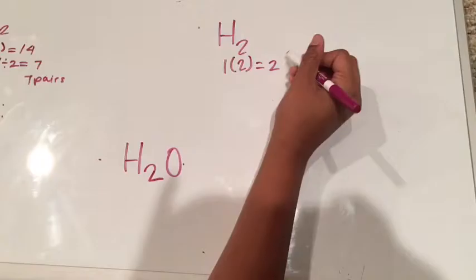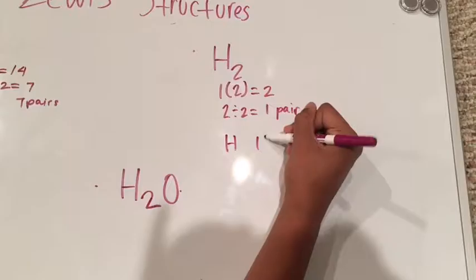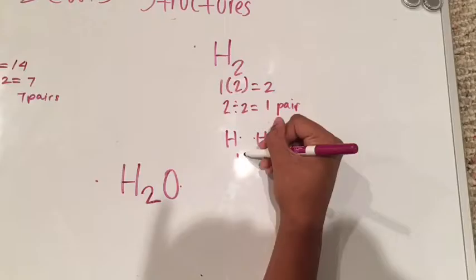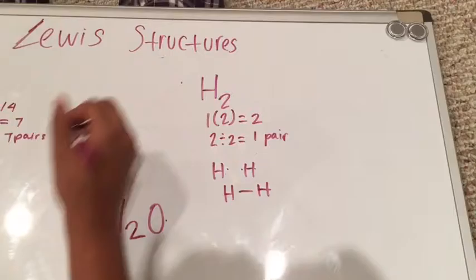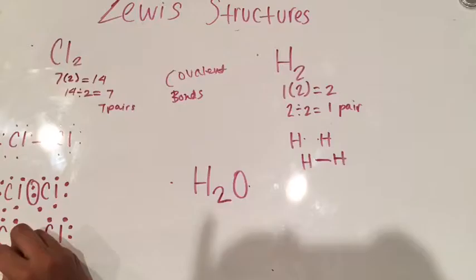Next we have hydrogen. Hydrogen has only one valence electron, so that's one times two equals two. We find how many pairs: two divided by two equals one, so there is one pair of electrons. For H₂, there's one dot here and one dot here, so you draw that line signifying the sharing.